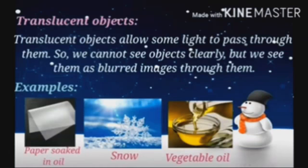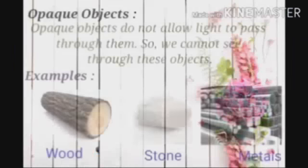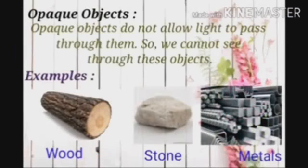Next, opaque objects do not allow light to pass through them, so we cannot see through these objects. For example: wood, stone, and metals.